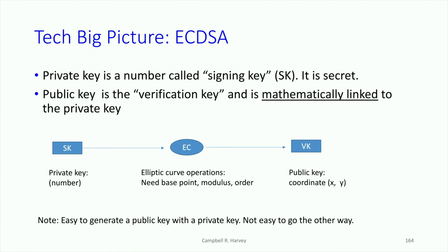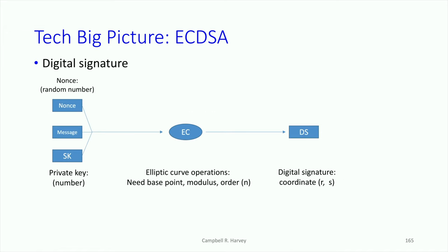The private key is called the signing key, or S key, and it's completely secret — we don't want to reveal that. The public key is sometimes called the verification key, and it's mathematically linked to the private key. Think of the private key going into an elliptic curve algorithm and a public key coming out. It's got 512 bits, and the reason it's longer is that it has two coordinates, x and y. It's easy to generate the public key from the private key, but very difficult to go in the other direction.